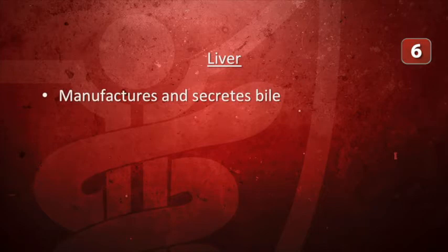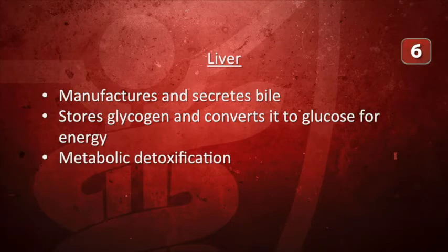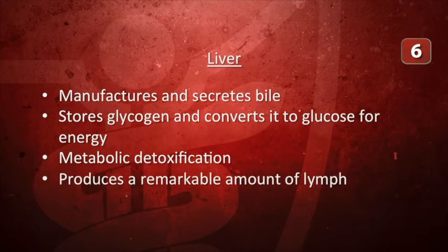The liver is a gland — the second largest organ in the body (the largest being the skin). The liver is considered a gland because it manufactures and secretes bile, a fluid involved in the digestion and absorption of dietary fat and fat-soluble vitamins. It also stores glycogen and converts it to glucose when the body requires energy. It is responsible for metabolic detoxification — breaking down potentially toxic substances in the bloodstream — and it produces a remarkable amount of lymph.